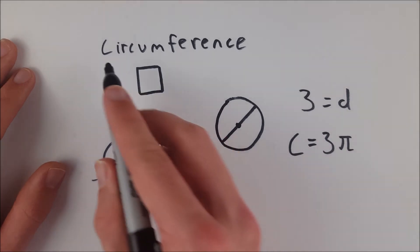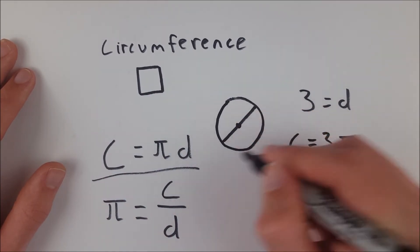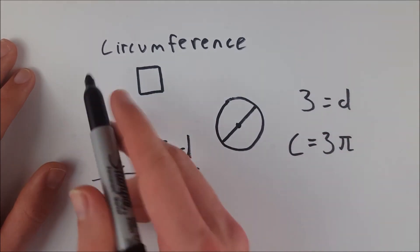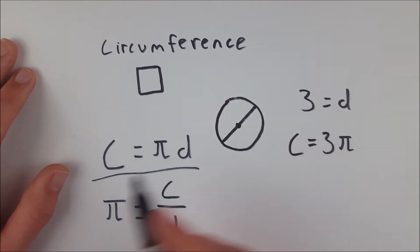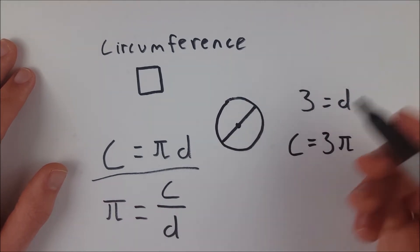So again, the circumference is just the length around the circle, the distance around the circle. It's just like the perimeter of a square. It's just the special word that we use for circles. And it has this very cool relationship to the diameter of a circle.